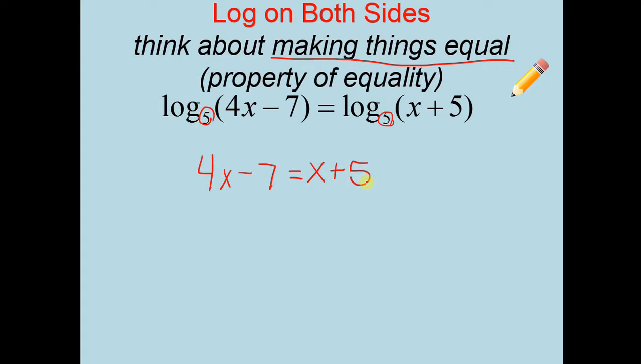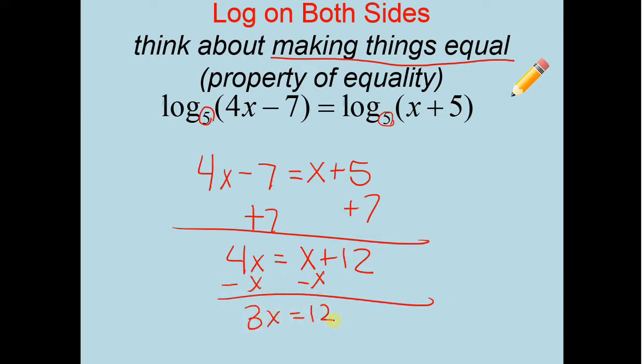So you just need the logs to be the same. So that is always going to happen as long as you have logs on both sides and they're the same base. So let's solve here. So I'm going to add 7. 4x equals x plus 12. So subtract x it looks like. So I get 3x equals 12. 12 divided by 3, x equals 4. And that checks out perfectly. Just in my mind, I did do a little quick check.